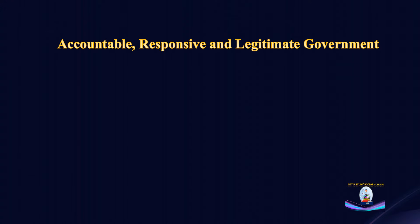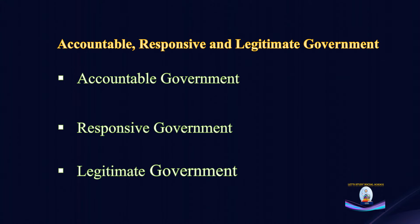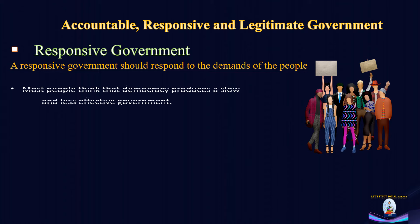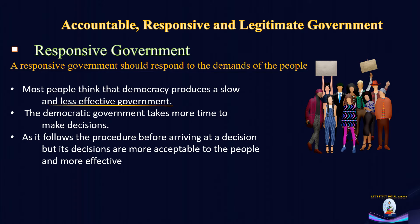We are going to discuss each of them in detail. As we are following the book, we will first talk about responsive government, then legitimate government, and lastly accountable government. A responsive government should respond and react quickly to the demands of the people. Most people think that democracy produces a slow and less effective government. While it may be true in some cases — because a democratic government takes more time to make decisions as it follows a procedure before arriving at a decision — those decisions are more acceptable to the people and more effective too.